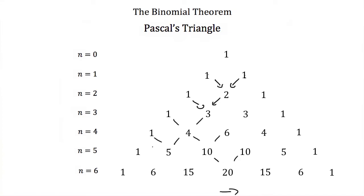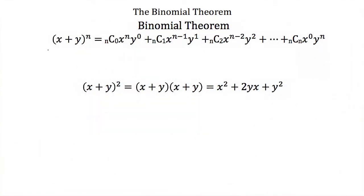Now let's see why Pascal's triangle is important — this is the binomial theorem. If I have x plus y to the nth power, I can write out the expanded version. The coefficients on the different terms are just the values of Pascal's triangle. The first term is x to the n power and y to the 0 power. In each consecutive term, the x exponent reduces by 1 while the y exponent increases by 1, all the way down to x to the 0 and y to the n power.